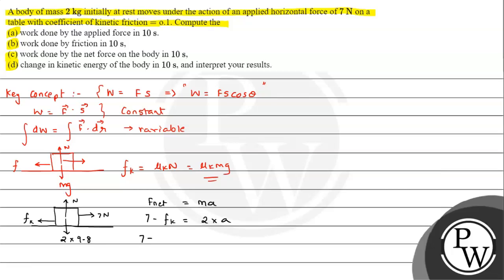We write F_net = 7 - μk × mg = 7 - (0.1 × 2 × 9.8) = 7 - 1.96 = 5.04 N, and this equals 2a. Therefore the value of acceleration comes out to be 2.52 m/s². This is a positive value, meaning the block is accelerating overall — the 7 N applied force is greater than the friction force of 1.96 N.